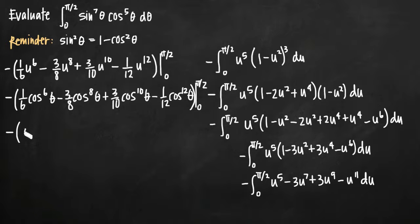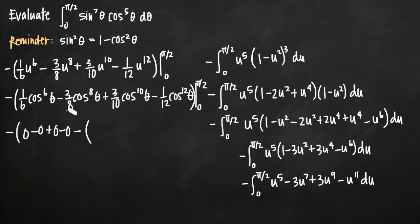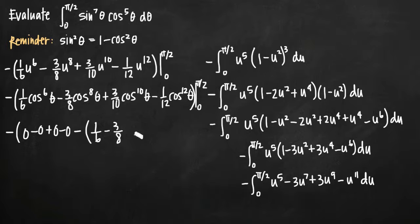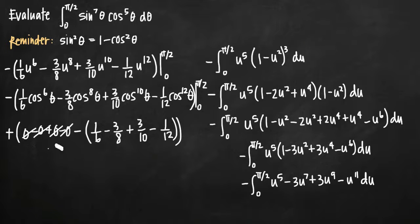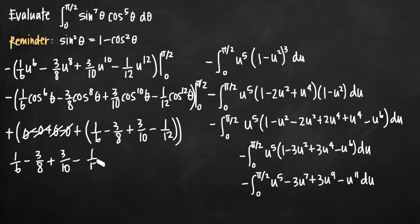Then we subtract whatever we get when we plug in 0. Cosine of 0 is 1, and 1 raised to the sixth, eighth, tenth, or twelfth power is still just 1. So essentially all we're left with is one-sixth minus three-eighths plus three-tenths minus one-twelfth. This negative sign cancels with the negative sign out front, so we just have one-sixth minus three-eighths plus three-tenths minus one-twelfth. Now we just need to find a common denominator.